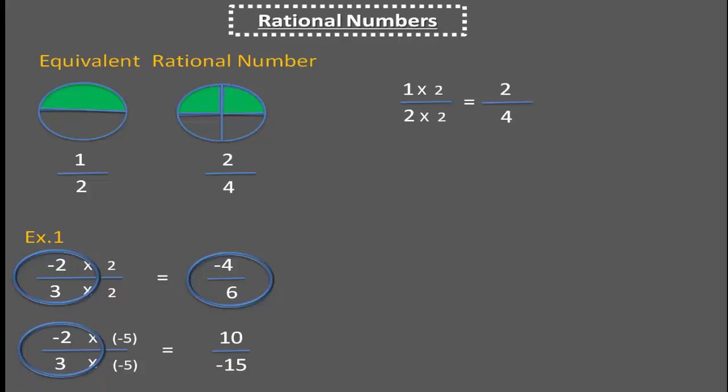So minus 2 by 3 is also equal to minus 10 by 15. Hence the number minus 2 by 3 is the same as minus 4 by 6 which is also the same as 10 by minus 15.